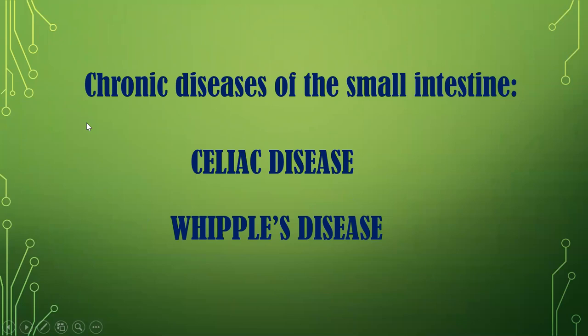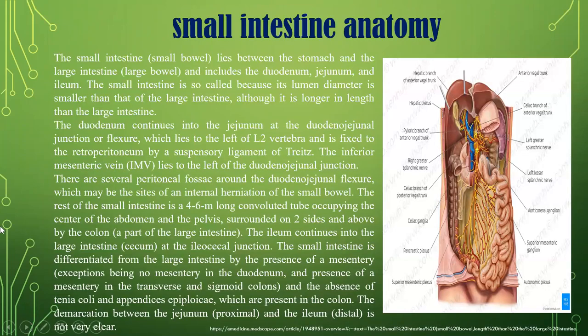Let's start from the small intestine diseases, and we will talk about celiac and Whipple disease as representatives. The small intestine lies between the stomach and the large intestine and includes the duodenum, jejunum, and ileum. It is called the small intestine because of its smaller lumen diameter, and it is longer in length than the large intestine.